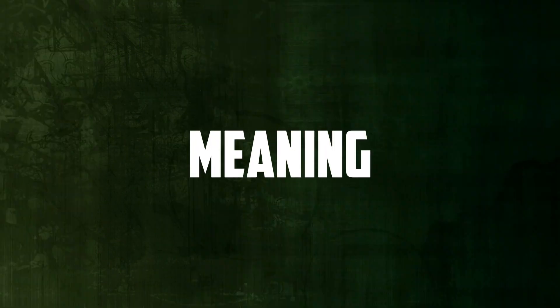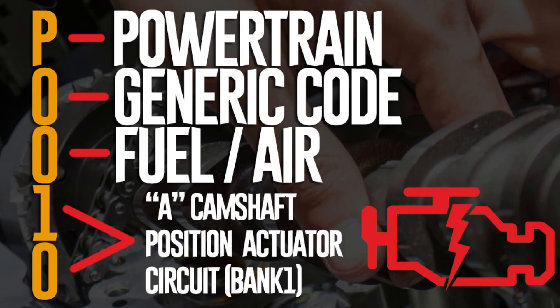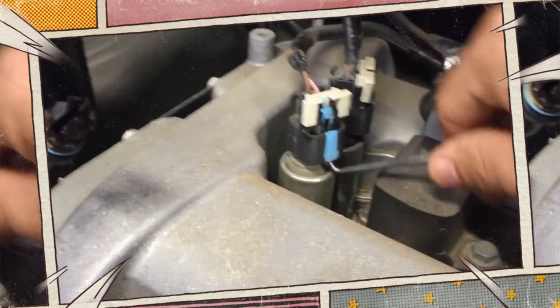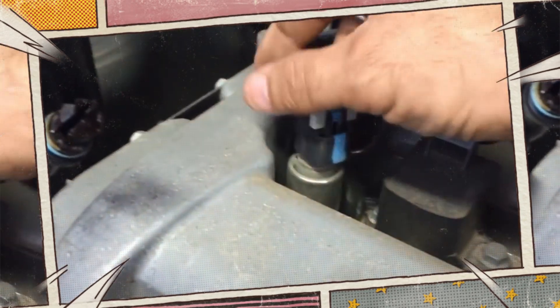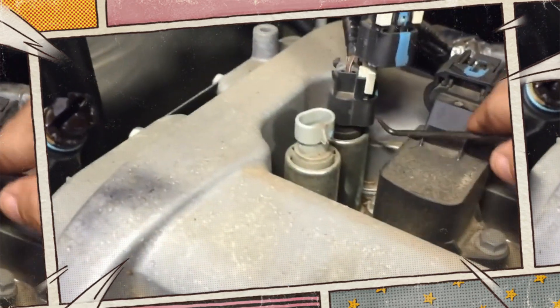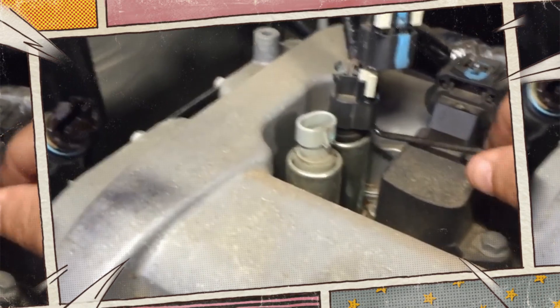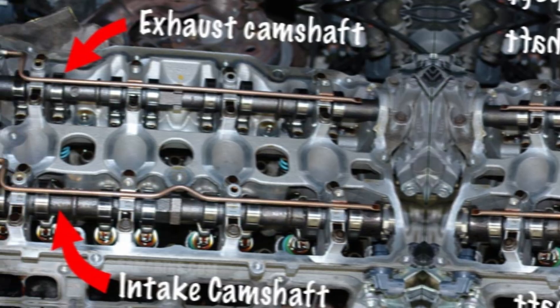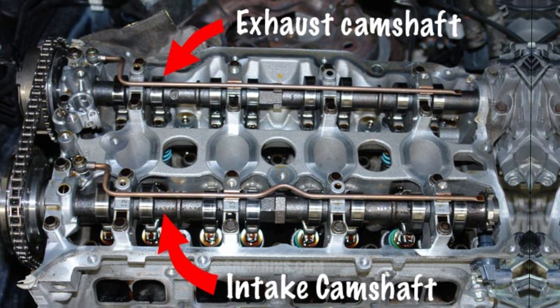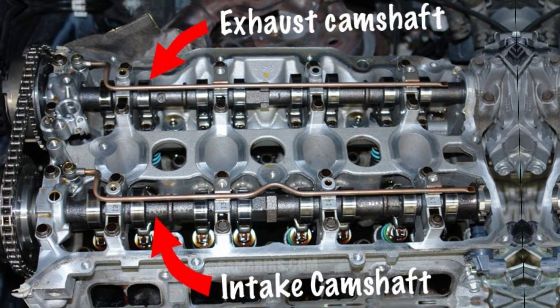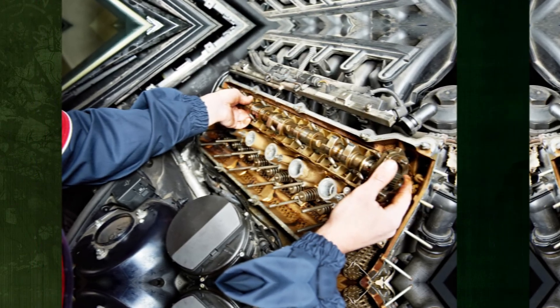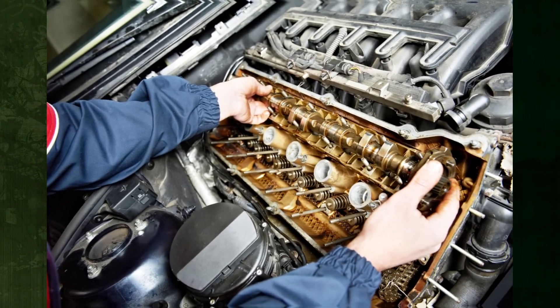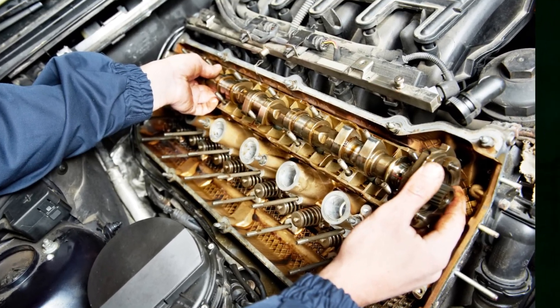P0010 is a general powertrain code that indicates that one of the VVT solenoids has a problem, as detected by the computer or powertrain control module. The problem is located at the intake camshaft on cylinder 1 side, designated as A and bank 1, respectively. If your engine has dual overhead cams, the intake camshaft is typically where the problem is discovered. If you have a V engine instead, it can be found at the first cylinder's intake camshaft.